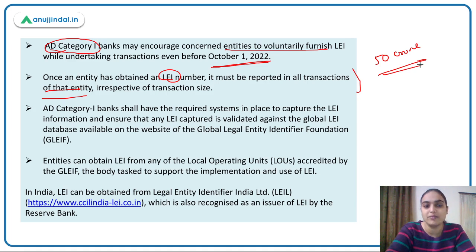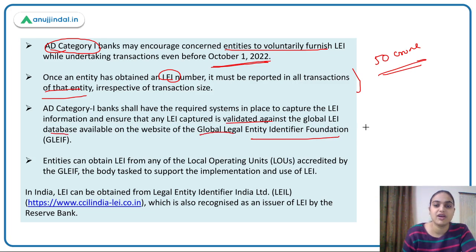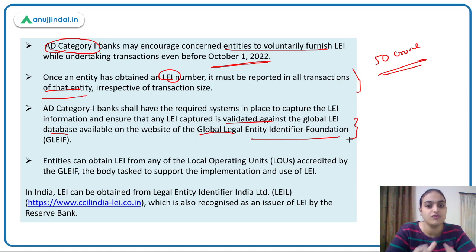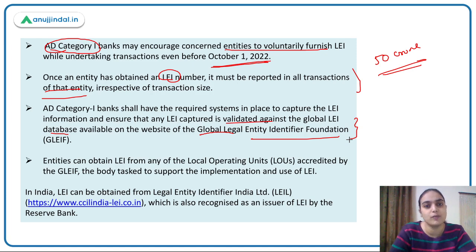AD Category 1 banks should have systems to capture this LEI information and ensure that it is validated against the global LEI database. The Global Legal Entity Identifier Foundation maintains a database of all LEIs. The AD Category 1 banks need to validate that whatever LEI number an entity has provided actually matches the global database.